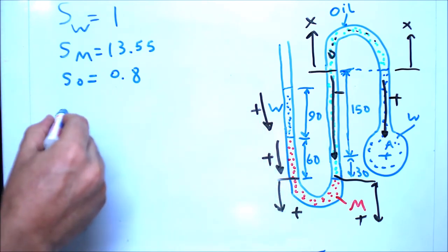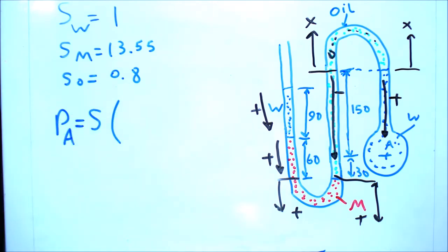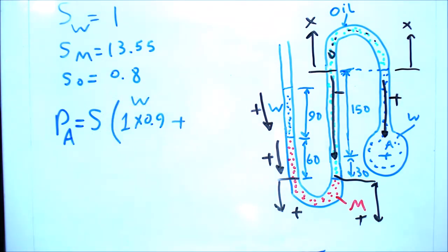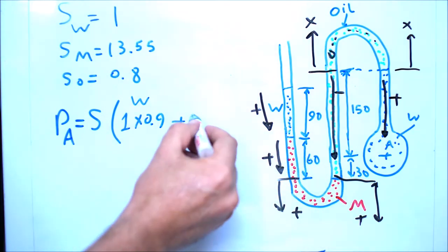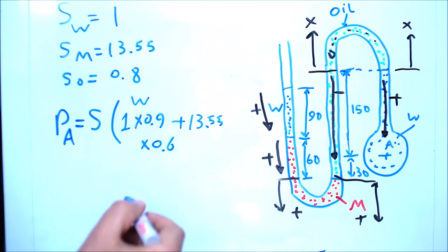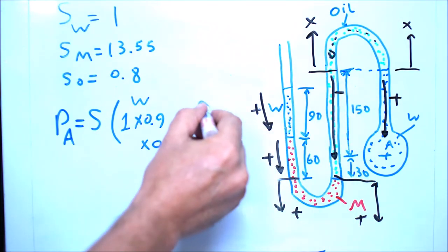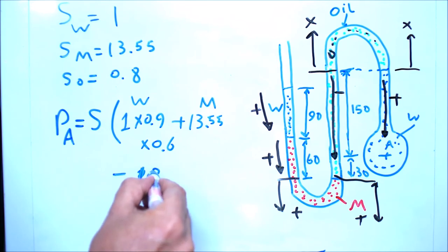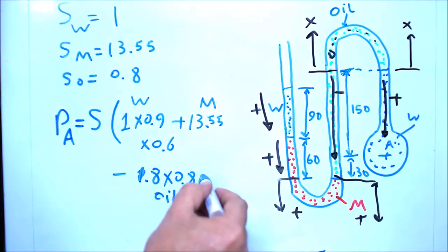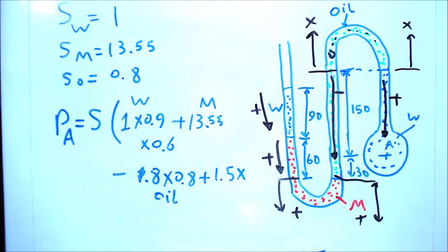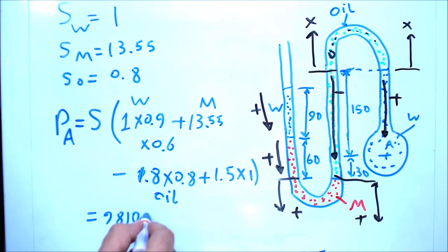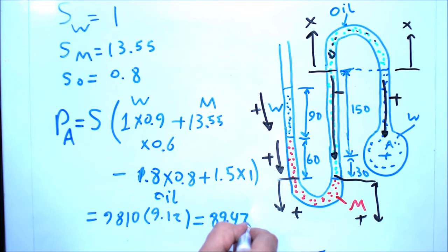The pressure at point A: gamma water times [S water × 90 cm + S mercury × 60 cm - S oil × (150+30) cm + S water × 150 cm]. Substituting gamma water = 9810, S water = 1, S mercury = 13.55, S oil = 0.8: 9810 multiplied by 9.1 gives a total pressure of 89 kilopascal.